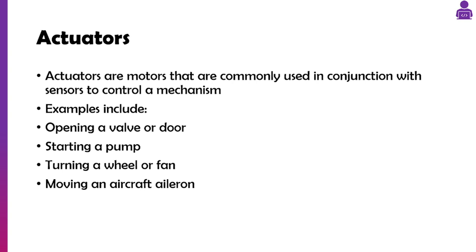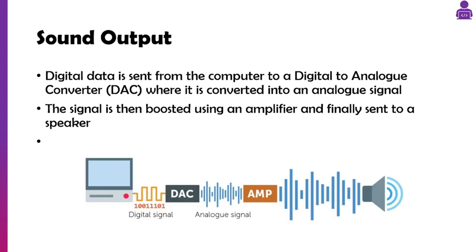An actuator is some sort of mechanical mechanism — it could be something that opens a door or a valve, starts a pump, turns a fan, or something as complex as an aircraft aileron. Essentially it's just a motor. For sound output, we take digital data, put it through a DAC to convert it to an analog signal, which then gets sent through an amplifier and a diaphragm to a speaker so we can hear things.